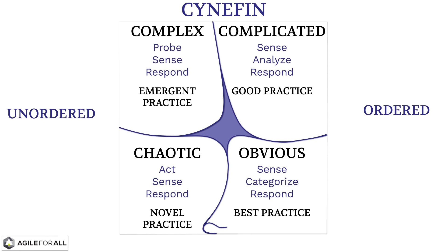At the beginning of the video, we called this a decision-making framework. That is because, depending on which type of system we are working with at the time, we will think and act in very different ways. This brings us to the center, which we call disorder, meaning we don't know which of the domains we are in. This is the space we are in most of the time, which leads to people acting based on personal preference rather than by analyzing which of the four decision-making processes are most appropriate.